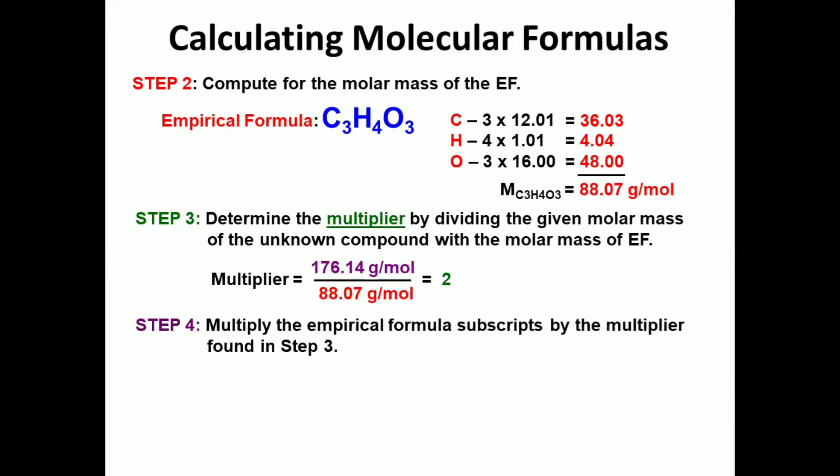With this, we can proceed now to step number 4. Multiply the empirical formula subscripts by the multiplier found in step 3. Once more, this is our empirical formula, C3H4O3.